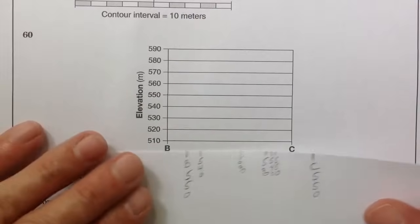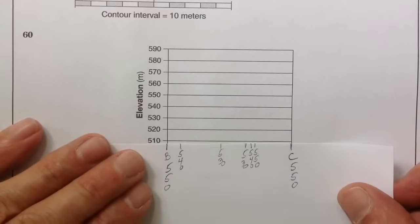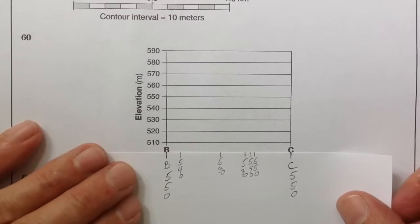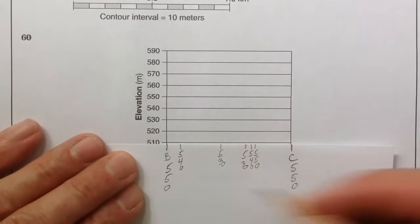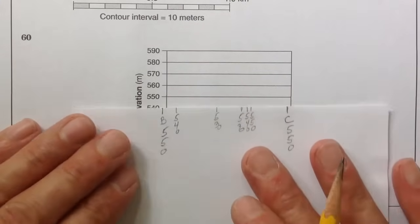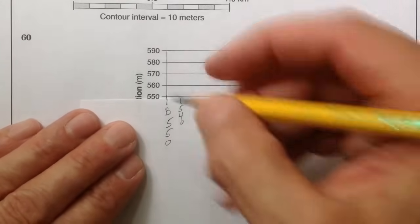And then, on the bottom here, you're going to have this grid. What you want to do is you're going to transfer the points here. So you want to line B and C up. They should match pretty exactly. And then you want to transfer points at these elevations. So you want to go like this, slide it up here to about there. And then this is 550.